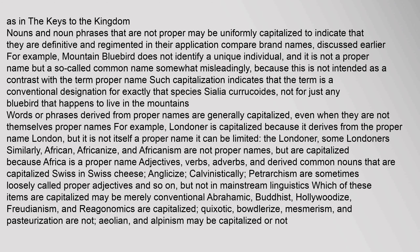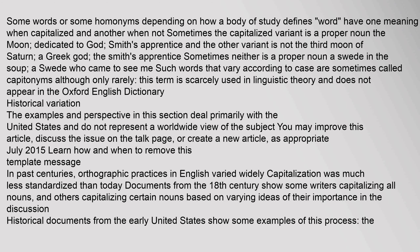Some words have one meaning when capitalized and another when not. Sometimes the capitalized variant is a proper noun — the Moon, dedicated to God, Smith's apprentice — and the other variant is not — the third moon of Saturn, a Greek god, the Smith's apprentice. Sometimes neither is a proper noun — a Swede in the soup, a Swede who came to see me. Such words that vary according to case are sometimes called capitonyms, although this term is scarcely used in linguistic theory.